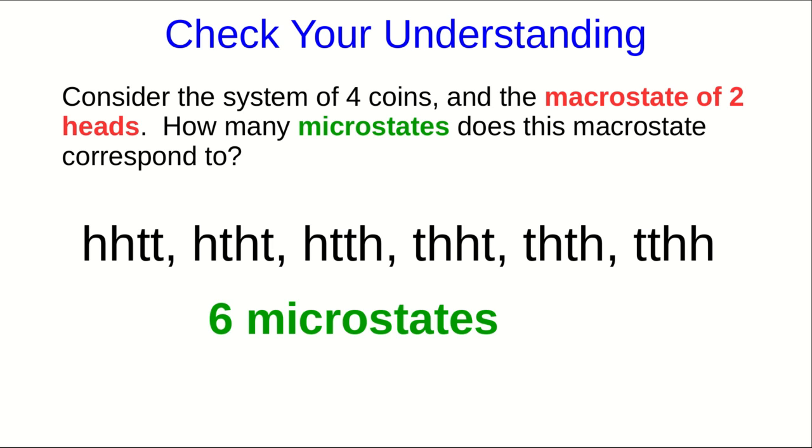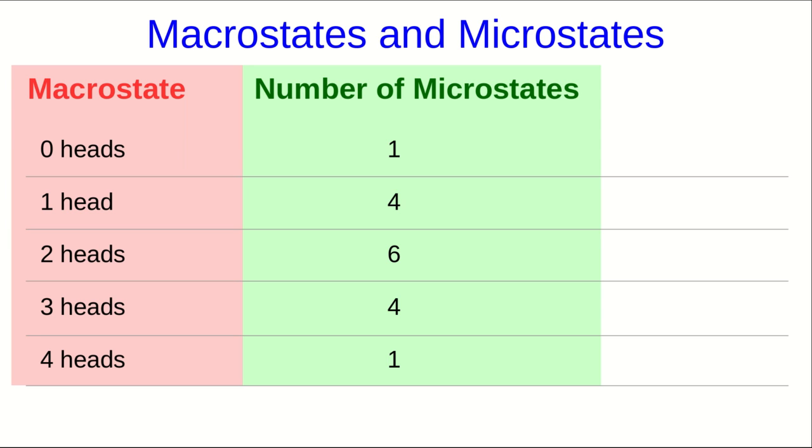If you know a little bit of stats or probability, you'll realize that this is four choose two. But if you didn't know that, don't worry about it. So here is a tabulation of how many microstates each macrostate of this system has. And if you know just a little bit of probability, you will have already realized that the total number of microstates that this system has is 16, or in other words, two to the power of four.